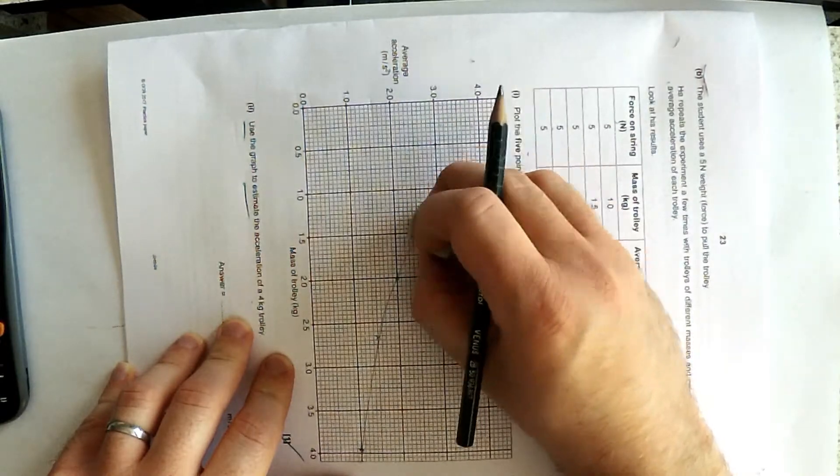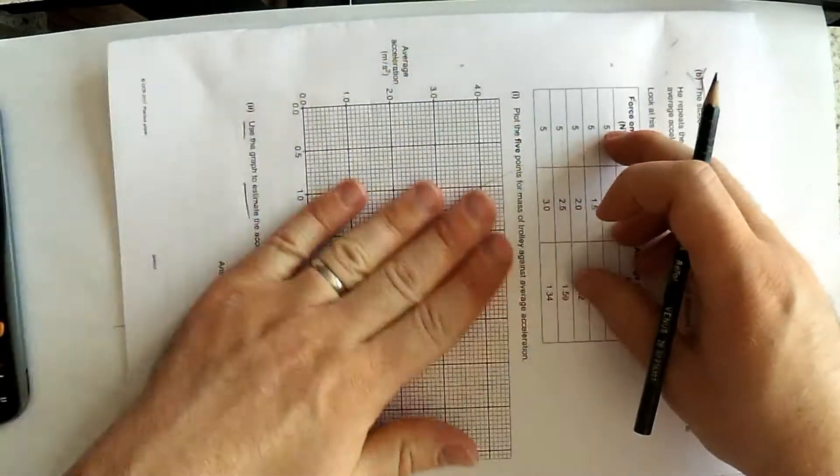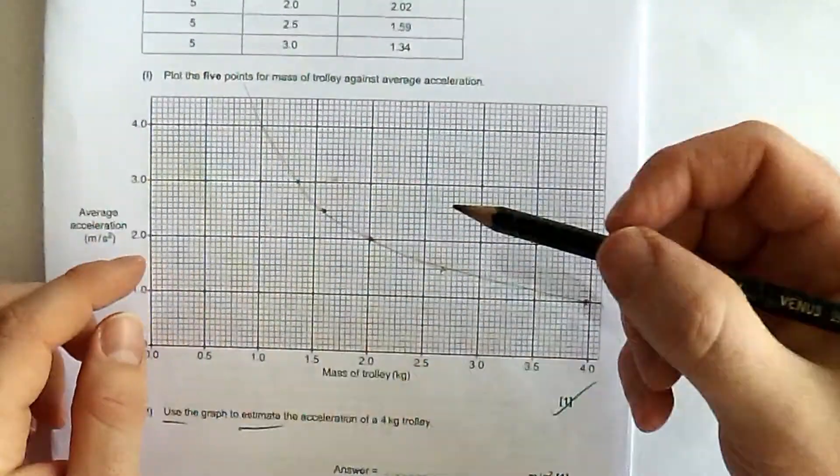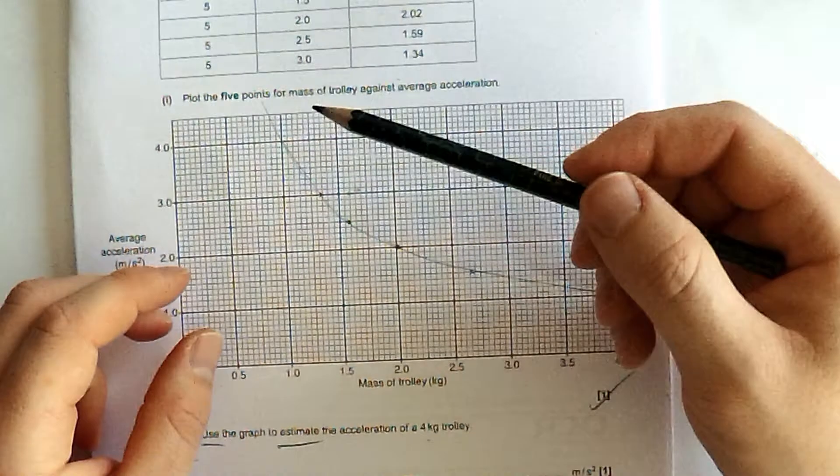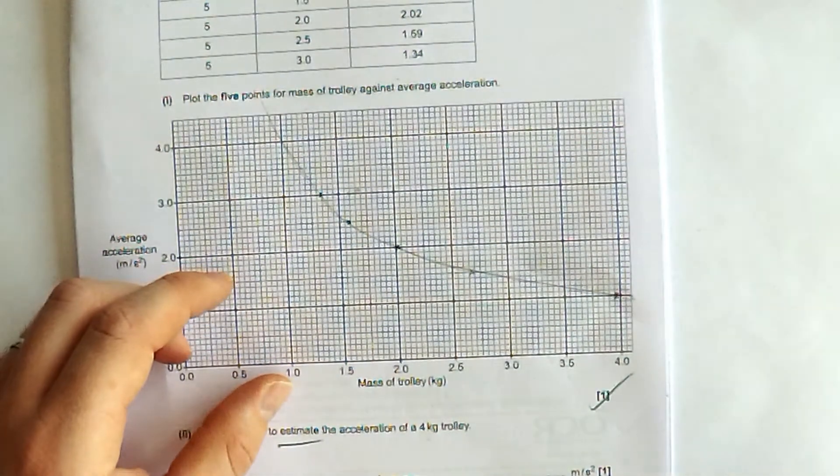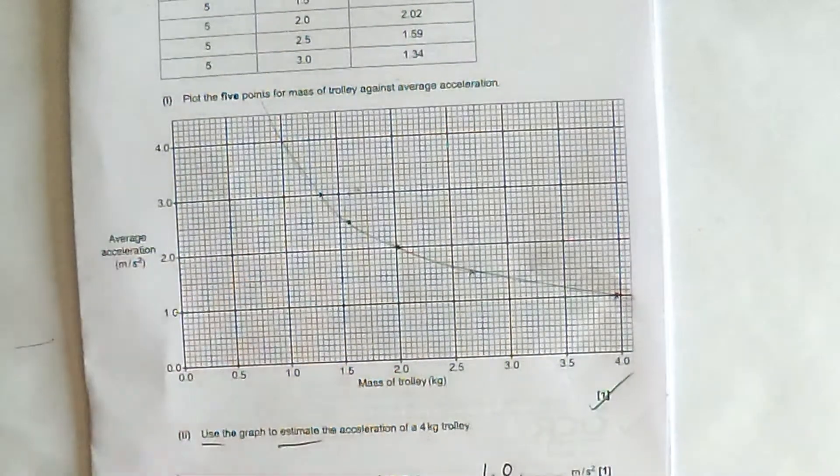My line is too hairy to be a good line of best fit, really. So there we go. Estimate the acceleration of four kilogram trolley. I would say one. Is that good enough? Yeah. One point nought. I'm going to go for it.